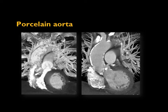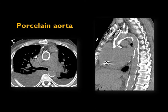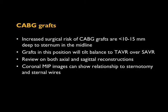Here's an example of a porcelain aorta with really extensive calcification — a terrible candidate for open aortic valve surgery and therefore a great candidate for TAVR. Another patient with extensive calcification similarly would not be a great candidate for open surgery. CABG grafts are important to report because they can tip the balance toward TAVR away from surgery, particularly if any grafts are less than one to one-and-a-half centimeters deep to the sternum in the midline, putting them at risk from the sternal saw.